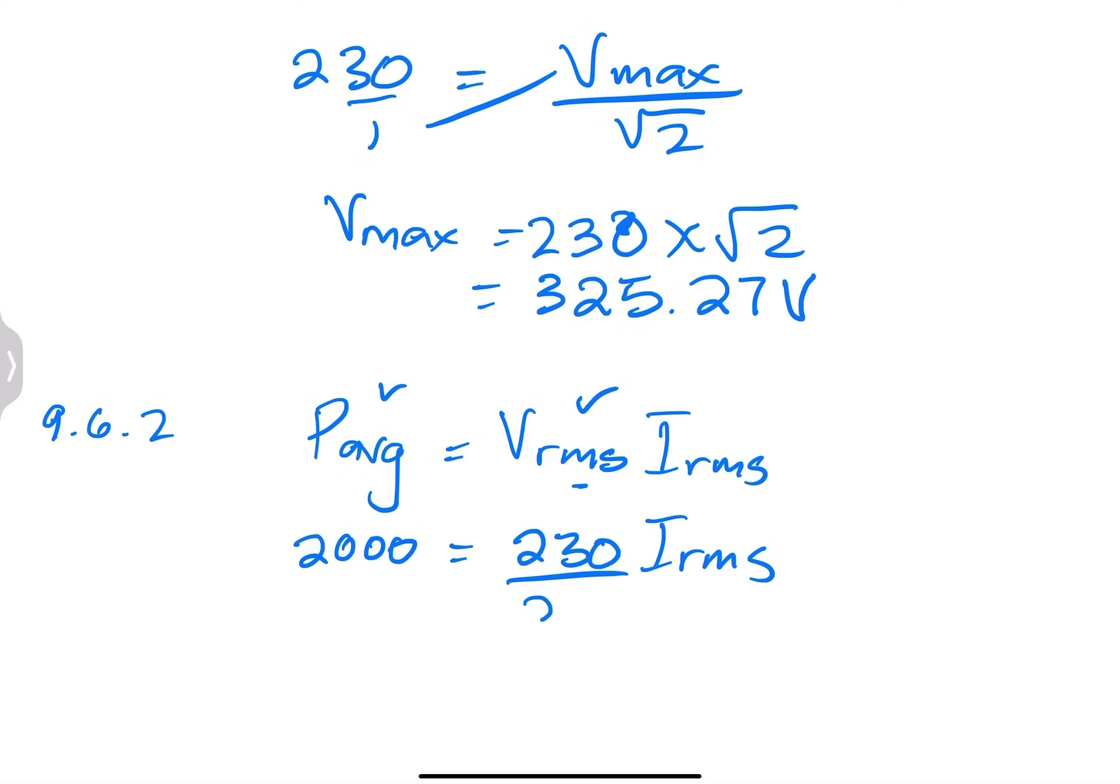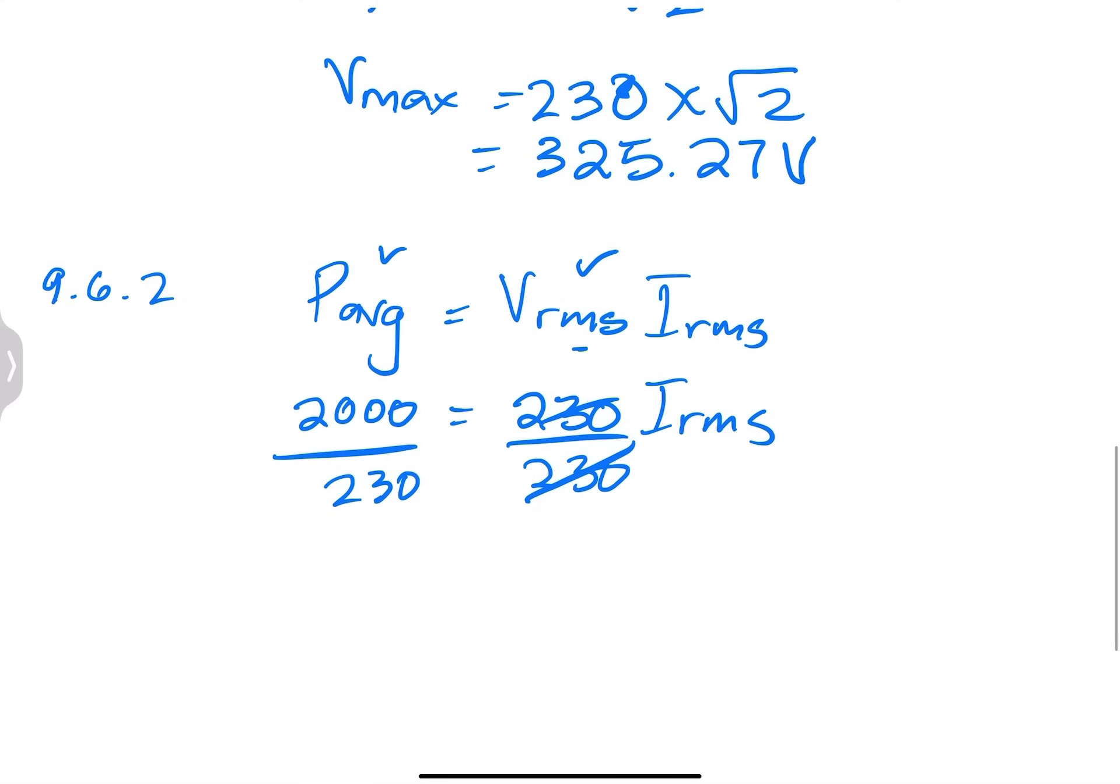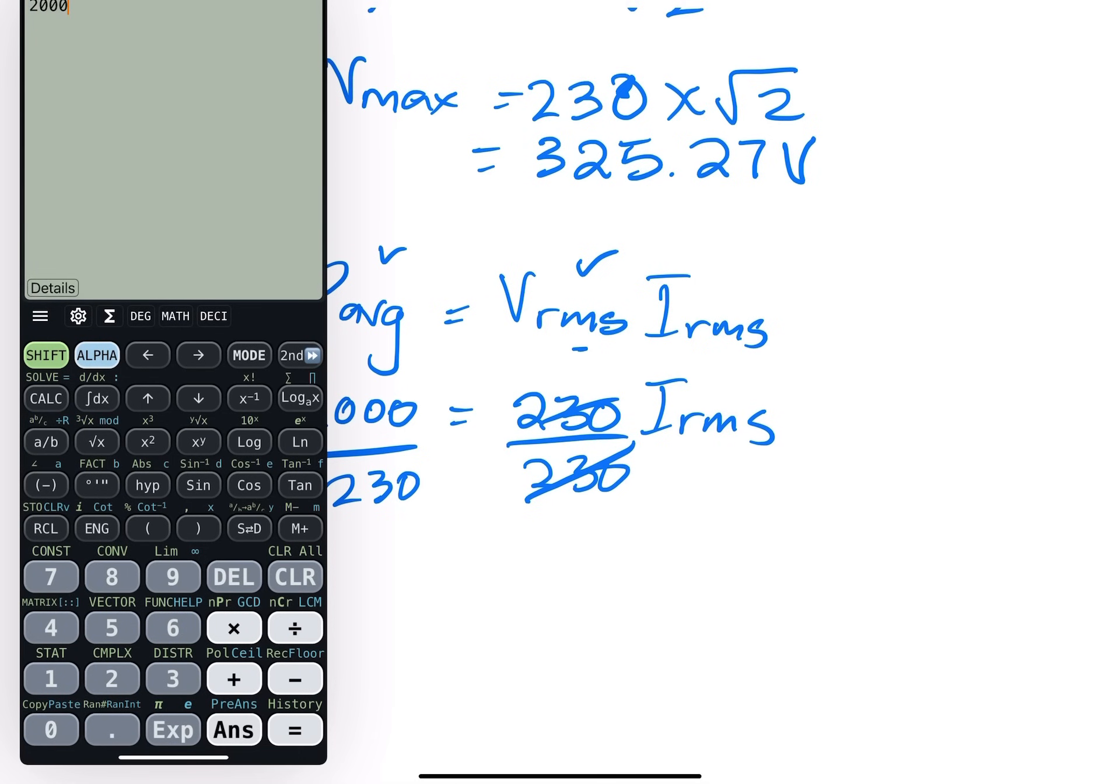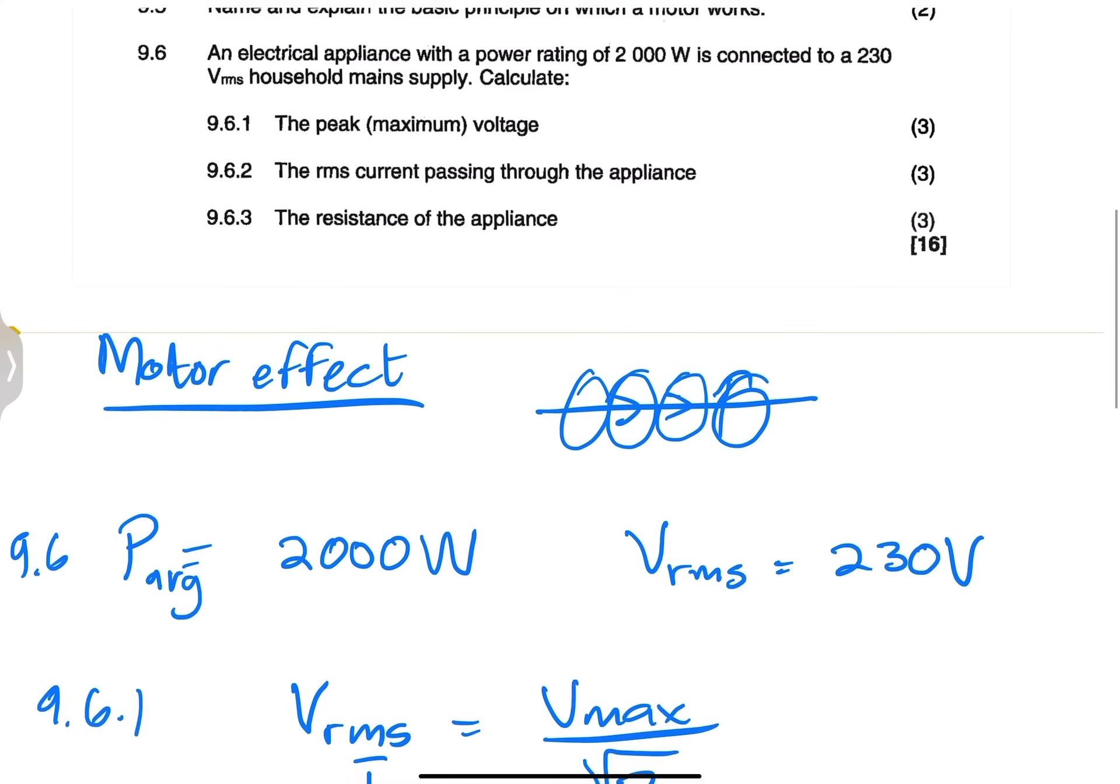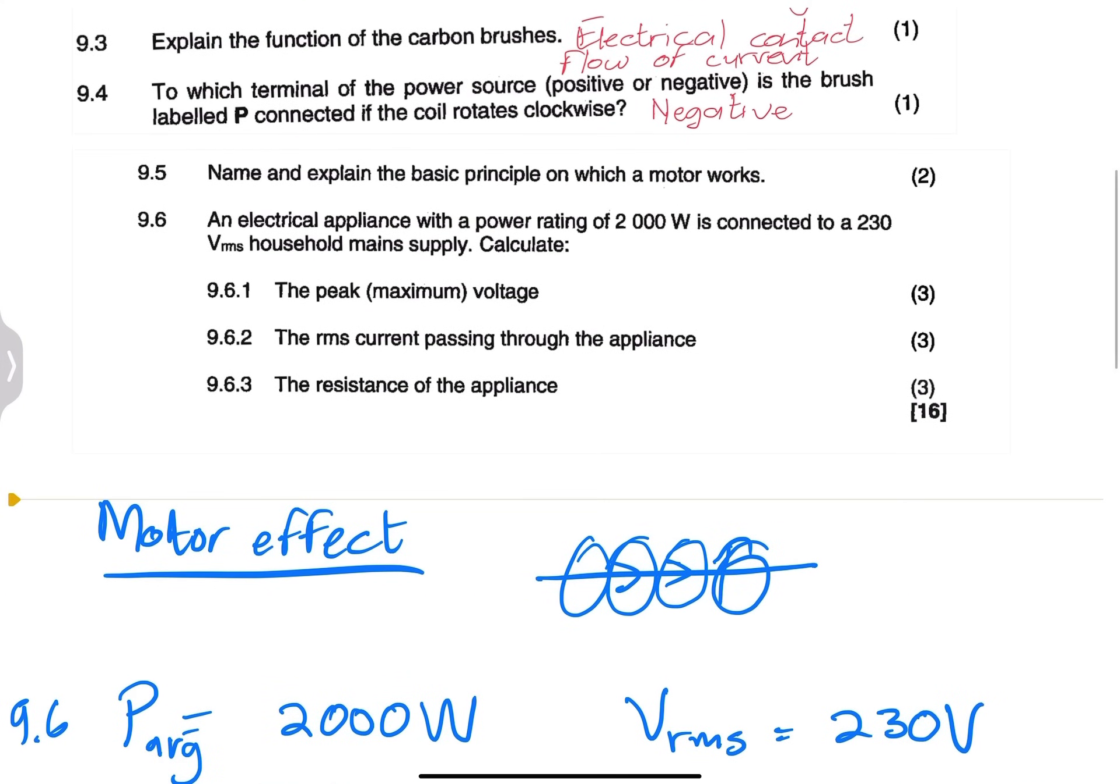So that's going to be 2000 equals 230 times I_RMS. And so to divide by 230, in this case, I have, so that's 2000 divided by 230. And I've got a current, RMS current value of 8.69. So we can actually say 8.7, if you don't mind, because obviously we'd have to round off in this case. So 8.7 amperes of current are passing through there.